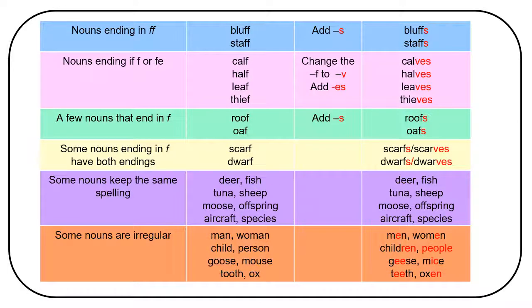And some nouns are irregular. Man, woman, child, person, goose, mouse, tooth, ox.